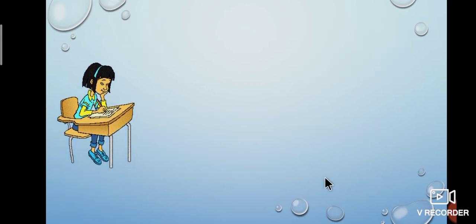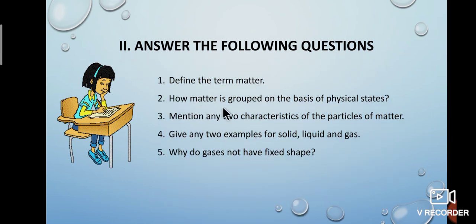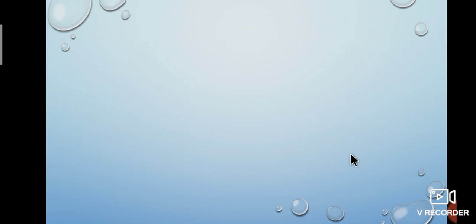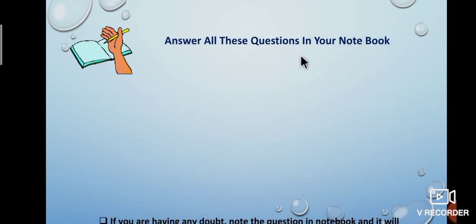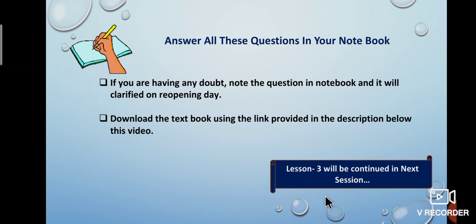Second, answer the following questions. First question: Define the term matter. Second question: How is matter grouped on the basis of physical states? Third question: Mention any two characteristics of the particles of matter. Fourth question: Give any two examples for solid, liquid and gas. Fifth question: Why do gases not have a fixed state? Answer all these questions in your notebook. If you have any doubt, note the questions and they will be clarified on the next class day. Download the textbook using the link provided in the description below this video. Lesson 3 will be continued in the next session. Thank you.